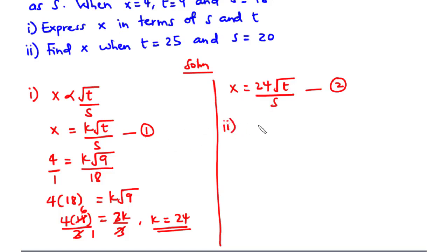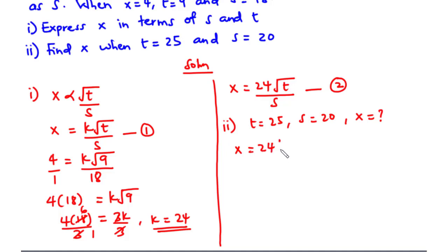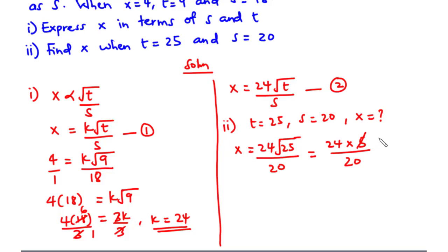For part ii, t is 25 and s is 20, and we need to find x. From equation 2, x equals 24 times the square root of 25 divided by 20. The square root of 25 is 5, so we have 24 times 5 divided by 20. Simplifying, 5 goes into 20 four times, and 4 goes into 24 six times, giving x equal to 6.